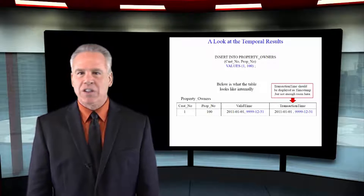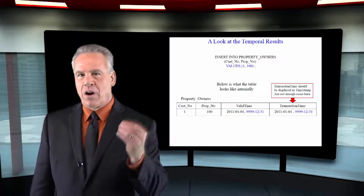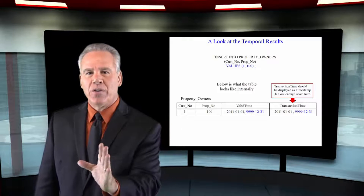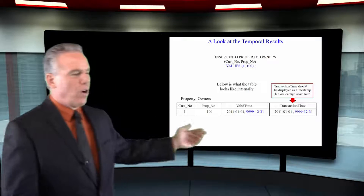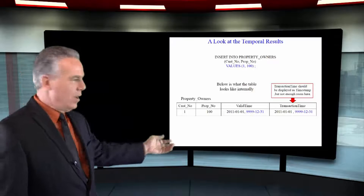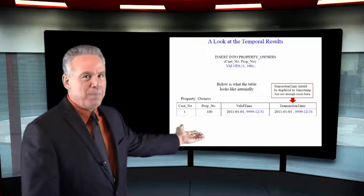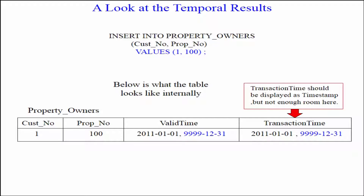We just inserted customer number one into our table — property 100, which customer number one owns. It was on January 1st, so let's take a look at our table. We can see customer number one and property number 100. Now we see the valid time, and remember it's a period data type so there are two values. It says it was bought on January 1st, and 9999-12-31, meaning Tara Tom is going to own this property forever — that row is open.